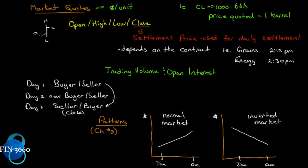In futures, we don't really use the word 'close' — we use the word 'settlement price.' So if the futures close at 2:15, the very last trade that occurs at 2:15 becomes the settlement price. You call it the close, but it also has the name 'settlement price,' and the settlement price is what's used for daily settlement.